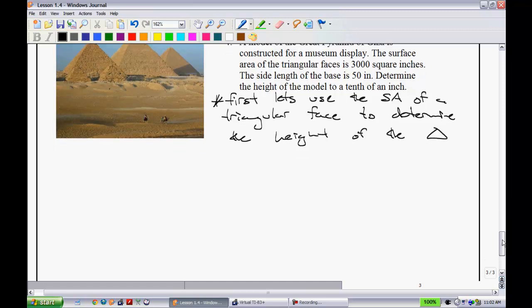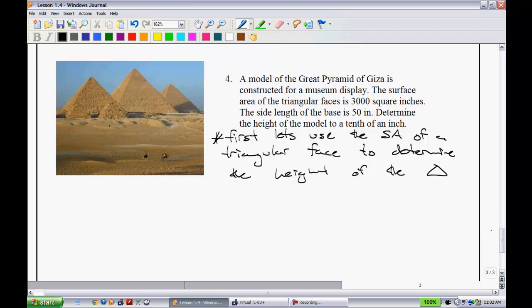Because if we can get the height of the triangle, then we're off to the races here. So here's what I'm thinking. If we take the area of a triangle, and we know that the area of a triangle is 1 half base times height. We know that we have 1 half. We know that the base, they tell you, is 50 inches. We don't know what the height is.